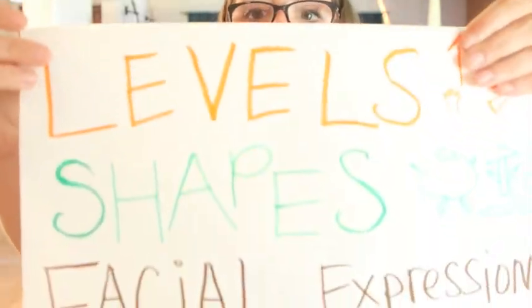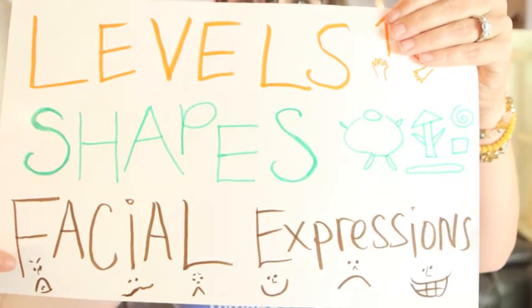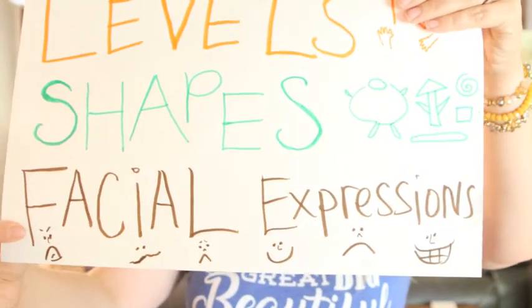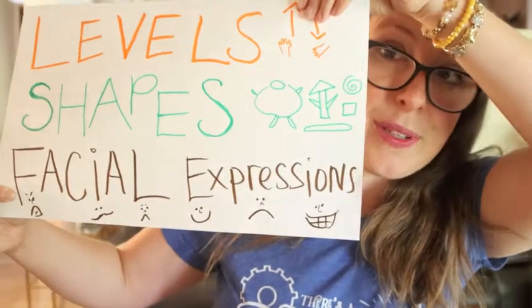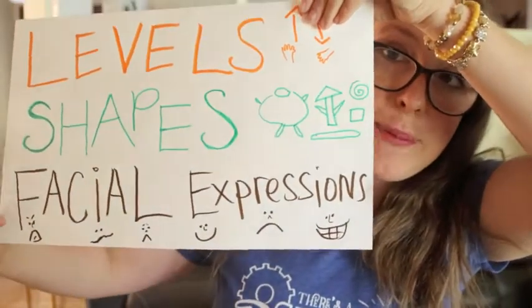You'll change the shape of your body to make your character really express who they are and what they're doing in the play. You'll also change your facial expressions to make yourself look and speak like the character you're playing. With levels, shapes, and facial expressions you can be any character, and all of these things live inside of you.